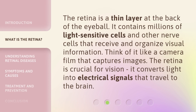The retina is a thin layer at the back of the eyeball. It contains millions of light-sensitive cells and other nerve cells that receive and organize visual information. Think of it like a camera film that captures images. The retina is crucial for vision — it converts light into electrical signals that travel to the brain.